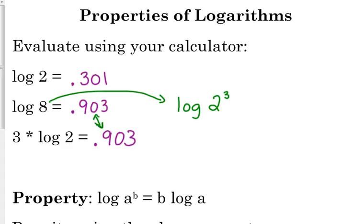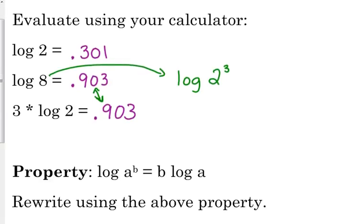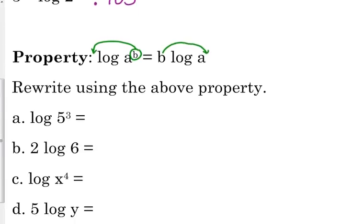So apparently these two values are equal to each other. So there's this property of logarithms that says if you have the log base a of something raised to a power, then that is equal to that power moved in front times the log of a. So we can move exponents to become coefficients in front or vice versa. We can move coefficients to become exponents. It just depends on which one is more useful to us.